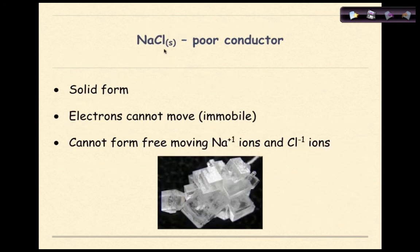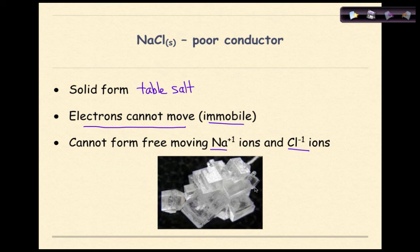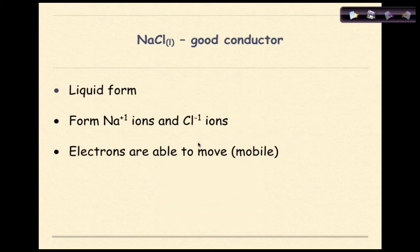Let's look at sodium chloride solid, NaCl(s) — table salt. In its solid form it is a poor conductor. Because it's a solid, the electrons are immobile. It cannot form free-moving sodium ions and chloride ions, so it cannot conduct electricity. Here is an image of sodium chloride as a crystal commonly seen on a dinner table.